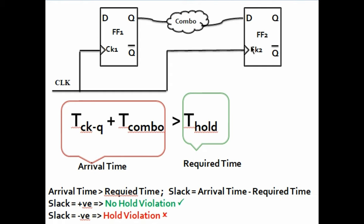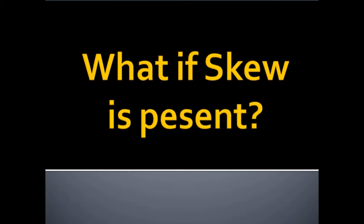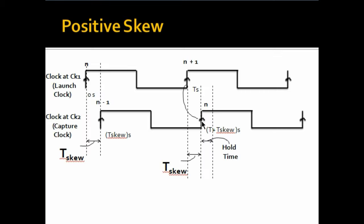Now, this was for an ideal case when there was no clock skew present, but let's see what happens if skew is present. If positive skew is present, it means that the clock at the capture flop is reaching late compared to the clock at the launch flop. So, what happens if clock reaches early at the launch flop and late at the capture flop? It means the n+1 data will be launched early from the launch flop, and the capture clock hasn't reached the capture flop yet, so the nth data would not have started to be captured yet. Basically, this nth data now has to be stable at the capture flop for t_skew plus t_hold time.